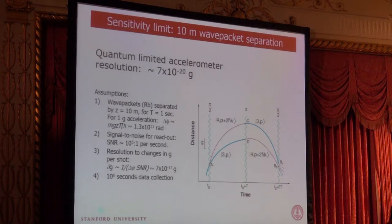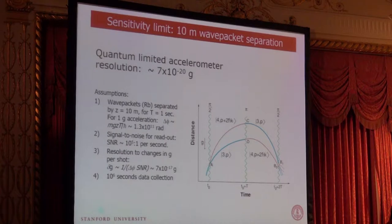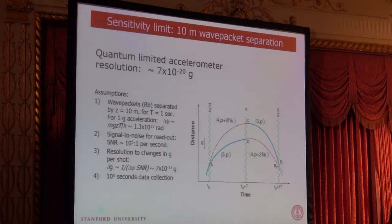In principle you can resolve changes in that acceleration at the part in 10 to the 20 level. What feeds into that calculation is some slightly unrealistic estimates of the type of signal and noise level you can achieve in such a measurement — splitting a fringe by part in 10 to the 5 in a second and then being willing to collect data for about a million seconds. The type of approach we use in my group is one we dubbed light pulse interferometry, where the wave packets are separated by interactions of the atom with laser light fields.